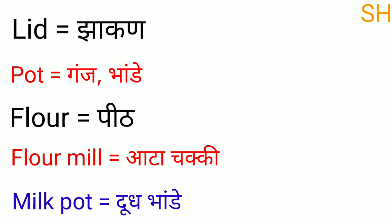Lid means zakon. Pot means guns kiwa bhande. Floor mill means aata chakki. Milk pot means dud bhande. Thanks guys for watching this video. If you like this, don't forget to subscribe to this channel. Thank you.